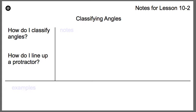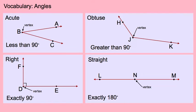Here are our notes for lesson 10-2: how do I classify angles, and how do I line up a protractor? We're going to start with some vocabulary, and this is again from fourth grade, but there are key things I'm going to be pointing out.